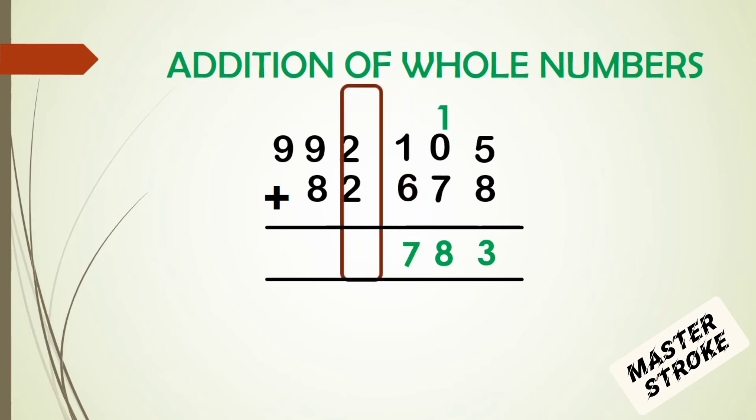In the thousands column, we have 2 plus 2, which gives us 4. We write 4 in the answer.